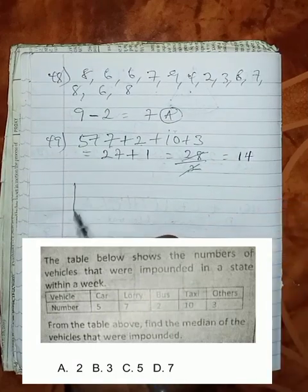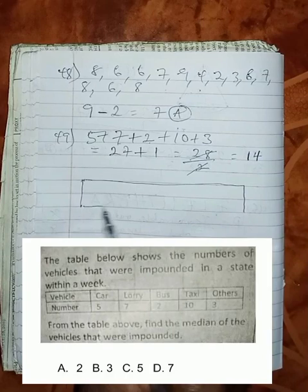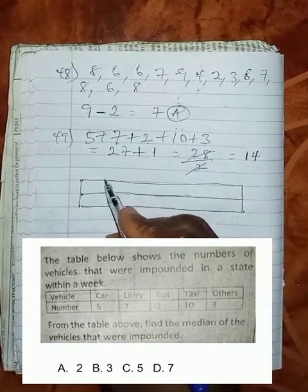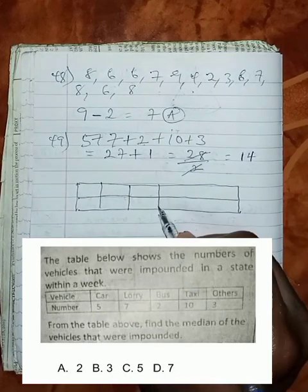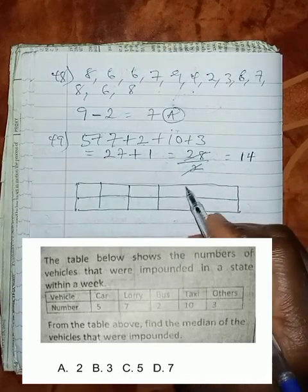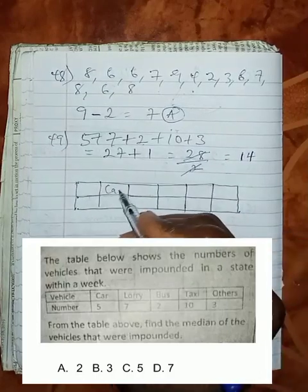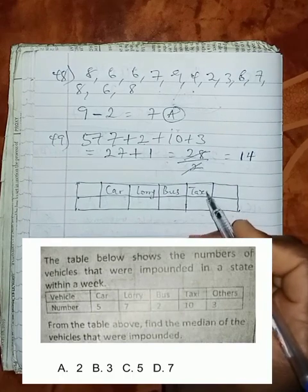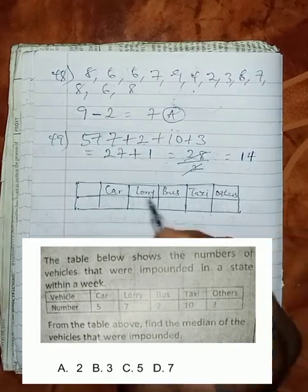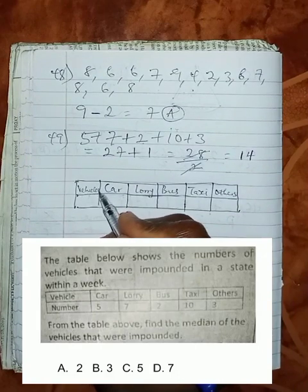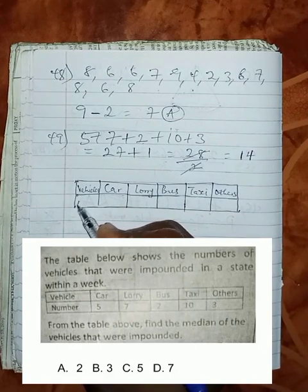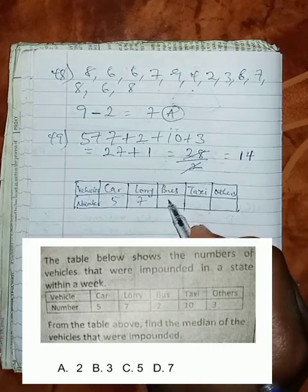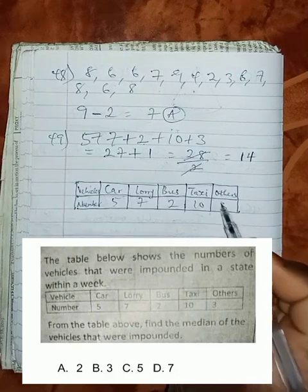So it means that we are going to now count from the table where that 14 falls. We have car, lorry, bus, taxi and others. Vehicles and number. We have 5, 7, 2, 10 and 3.